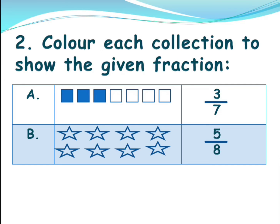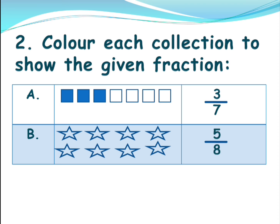Next you have some stars. The denominator is eight, meaning total is eight. Let's count: one, two, three, four, five, six, seven, eight — yes, eight stars. The numerator is five, so we need to color five: one, two, three, four, five. The fraction of these stars is five by eight, where five are colored and eight is the total.